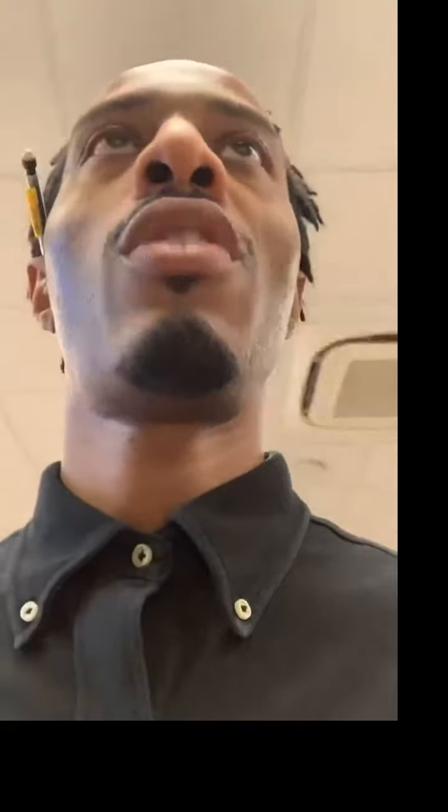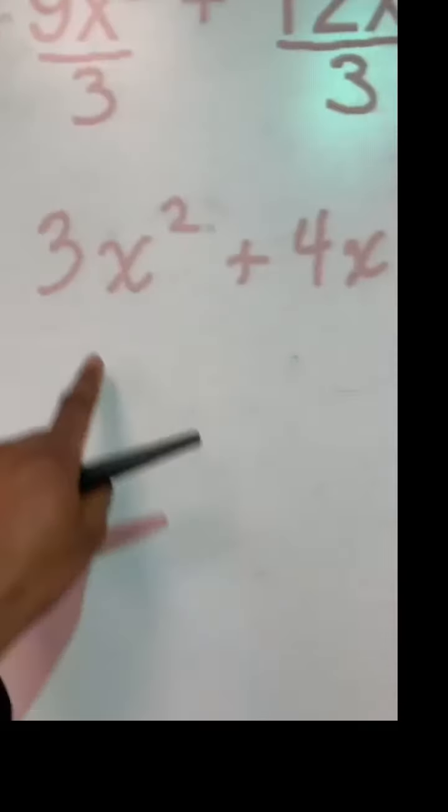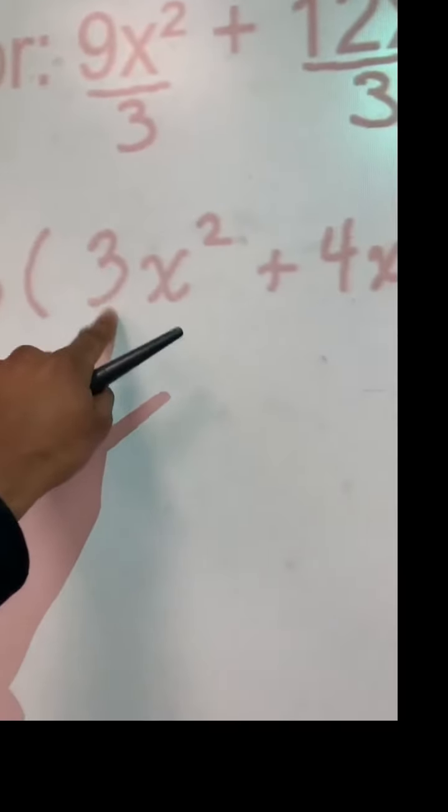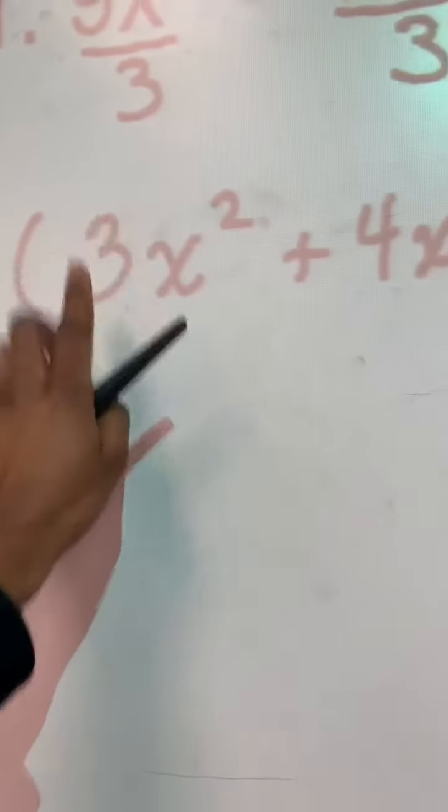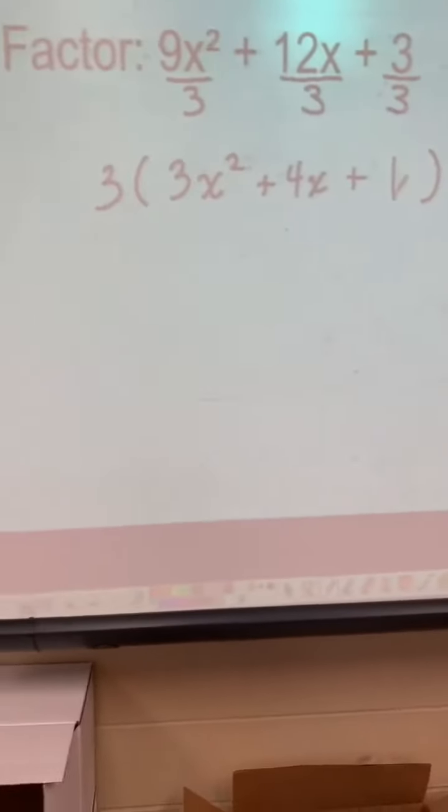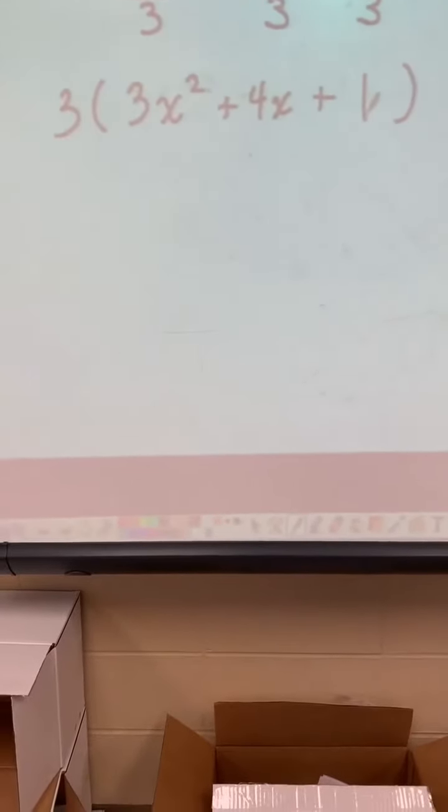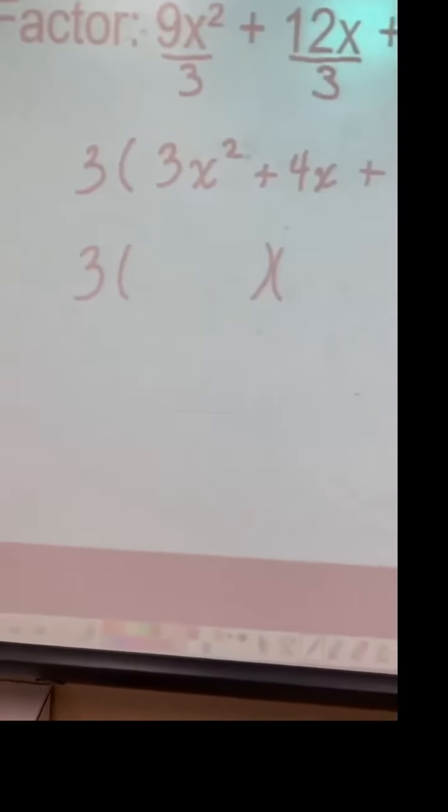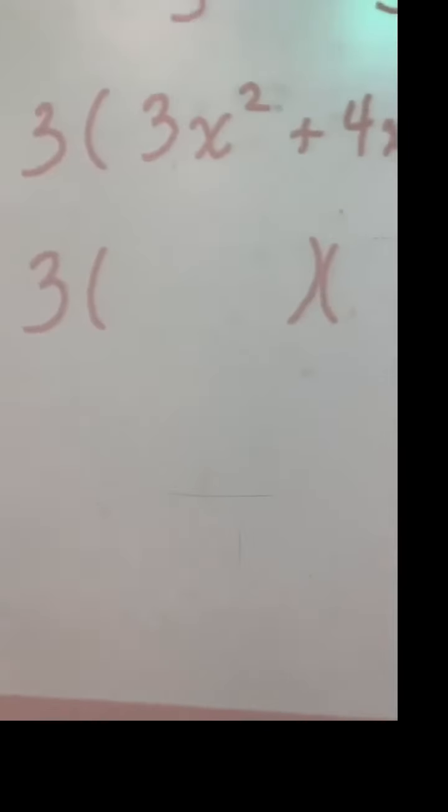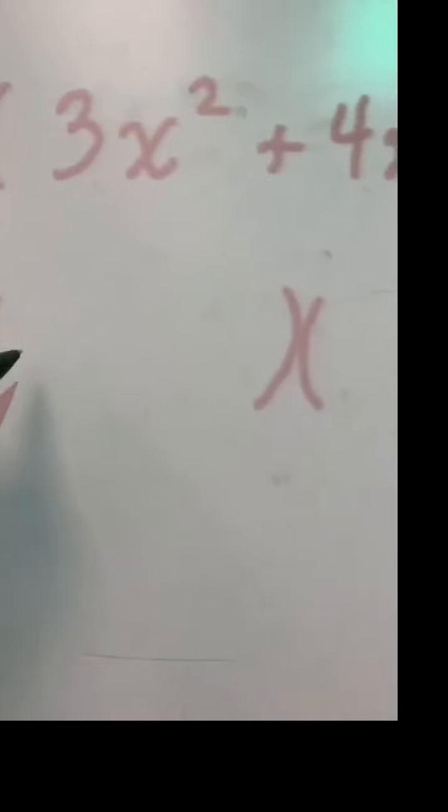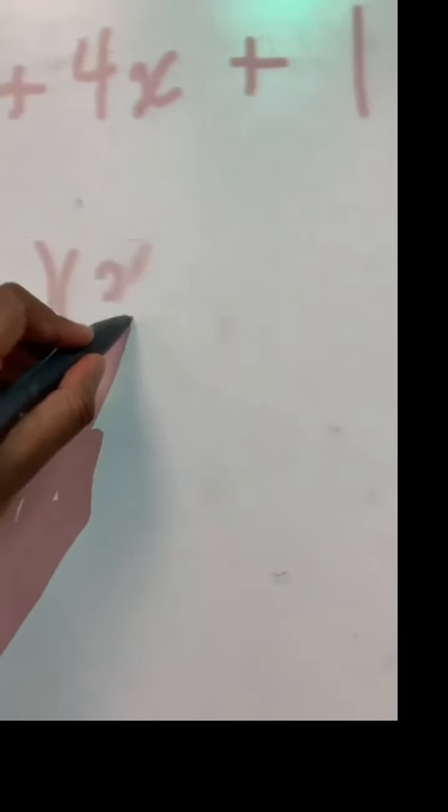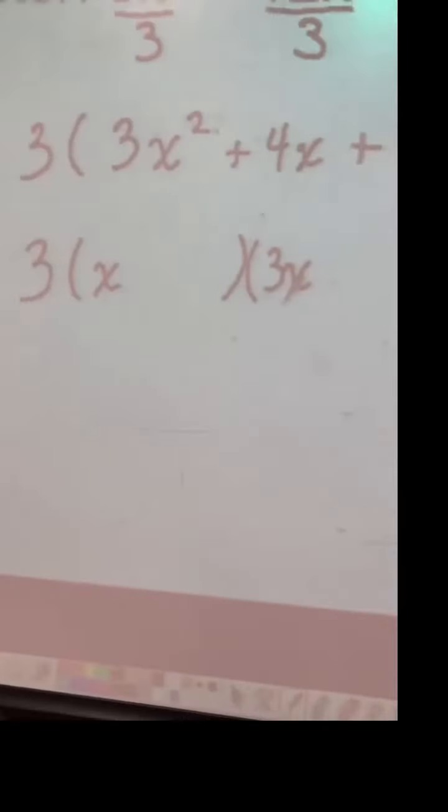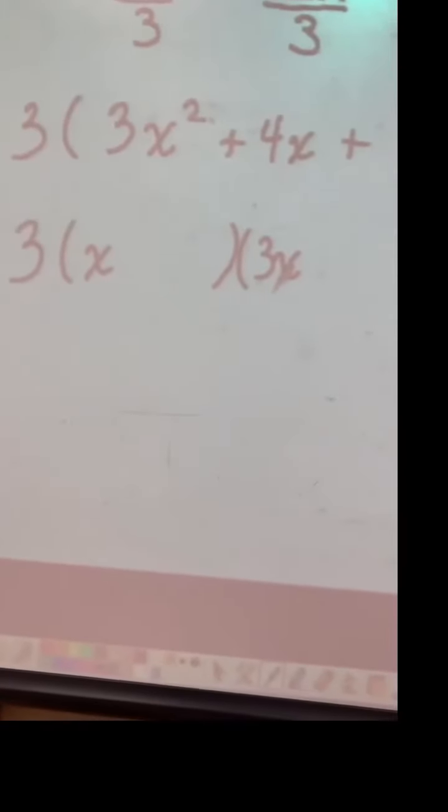This is going to be the first example where the leading coefficient or the first term isn't just a coefficient of 1. It's a 3 here now. So we have to think about this slightly different. It's not harder, but you do have to pay attention to more detail now. Luckily, 3 is a prime number, so the only option I have is 1 times 3. So I have an x times a 3x, because that's the only way I'm going to get 3x² is multiplying x times 3x.